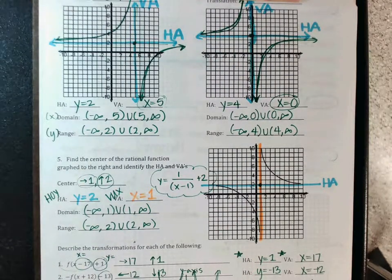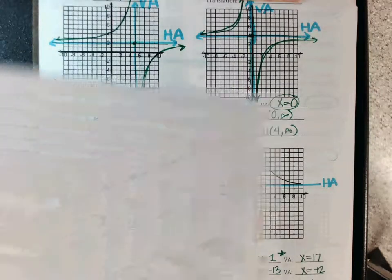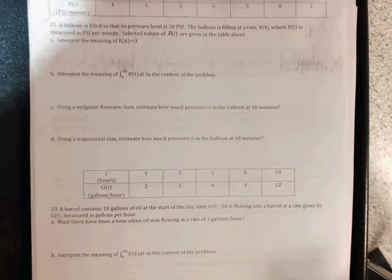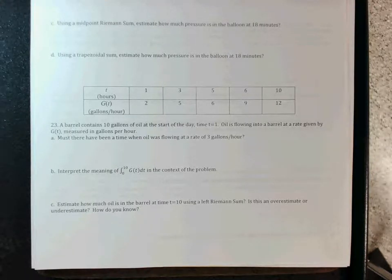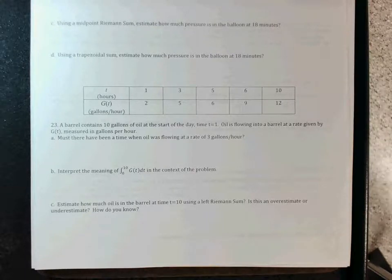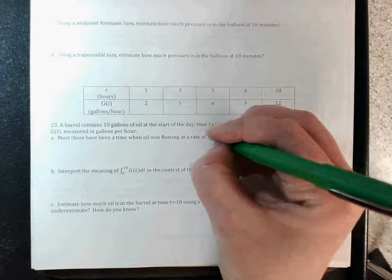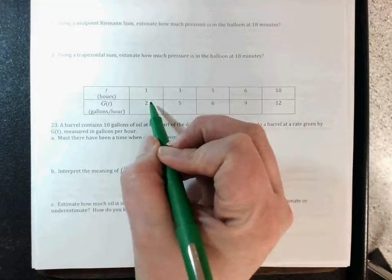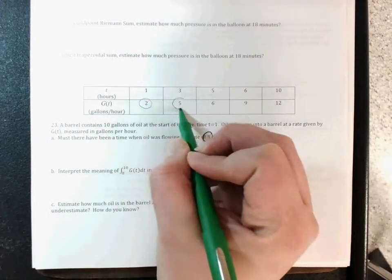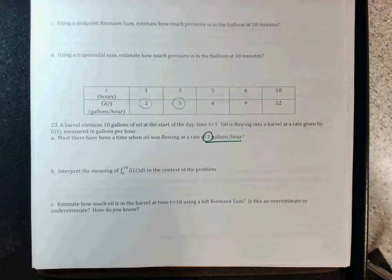Let's look at number 23. A barrel contains 10 gallons of oil at the start of the day at time 1. Oil is flowing into the barrel at a rate given by g(t), measured in gallons per hour. Part A asks: must there have been a time when oil was flowing at a rate of 3 gallons per hour? The rate goes from 2 gallons per hour to 5 gallons per hour — so does it have to hit 3?